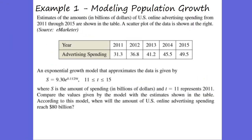We're going to take a look at a lot of applications of these things. First, let's look at modeling population growth. We have some data from 2011 to 2015, and from time t=11 to t=15, it gives us the function s = 9.30e^(0.1129t). The question asks: when will we reach 80 billion dollars? So 80 billion will be our s, set equal to 9.30e^(0.1129t).